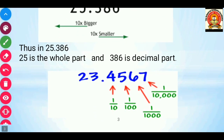Here is one more example: 23.4567. So 23 is the whole number part and 4567 is the decimal part. The 4 represents the 10th place, 5 represents the 100th place, 6 represents the 1000th place, and 7 represents the 10,000th place.